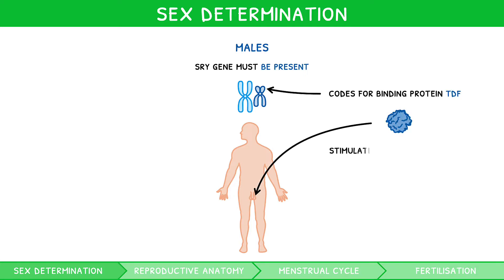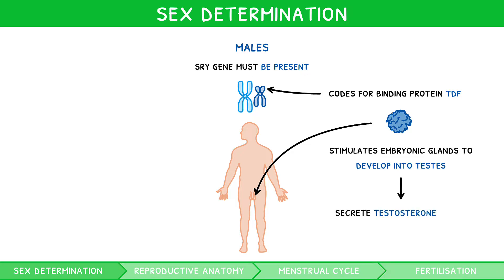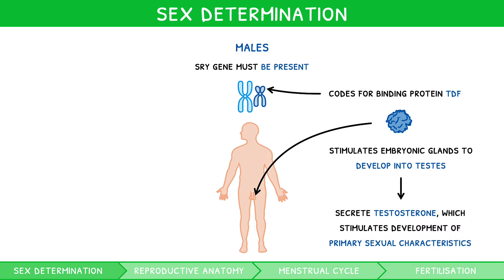which stimulates the embryonic glands to develop into testes. The testes are crucial for male development, as they secrete the hormone testosterone from the 8th to 15th week of pregnancy. Testosterone stimulates the development of male primary sexual characteristics, such as the growth of a penis. In addition, at puberty, testosterone promotes male secondary sexual characteristics.